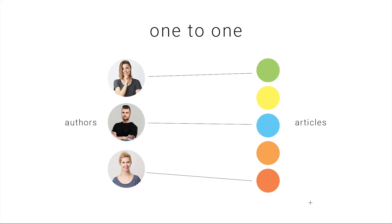One-to-one relation type. Let's say we have two post types: authors post type and the articles post type. We want to link the authors post type to the articles post type, and one author has written only one article. This means that one author will be linked to only one article that this particular author has written. One author cannot be related to more than one article.